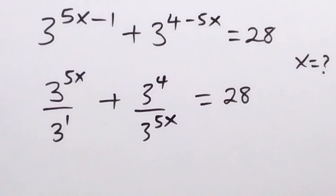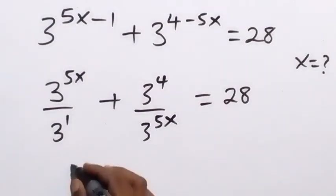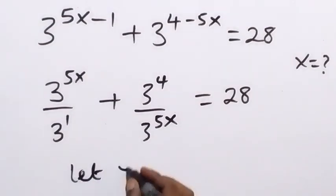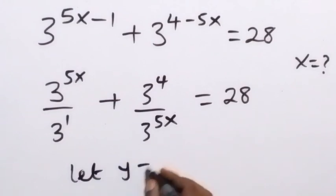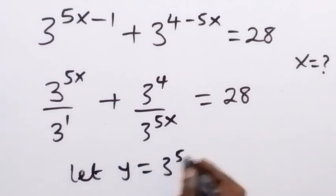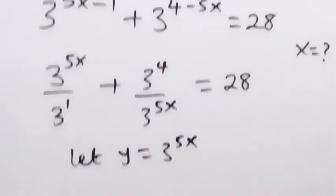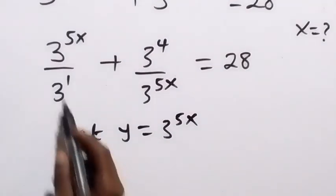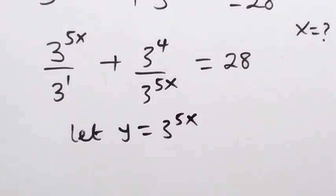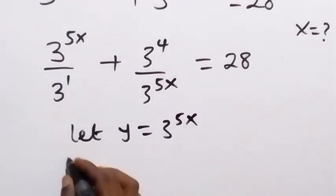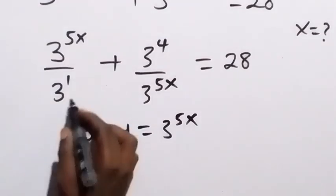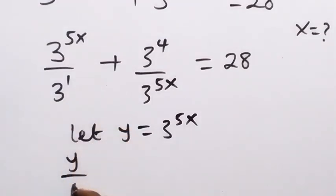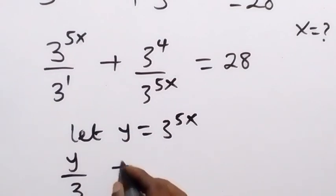We can see 3 raised to power 5x is common, so we use a substitution. Let y equal 3 raised to power 5x. Then in the next step we replace it as y, so we have y over 3 — since 3 raised to power 1 is 3 — then plus...